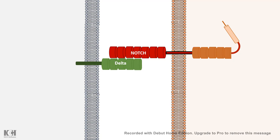Both Notch and Delta have EGF repeats. In the case of Notch, the intracellular domain contains an ankyrin repeat and also a PEST domain for its degradation by E3 ubiquitin ligase.